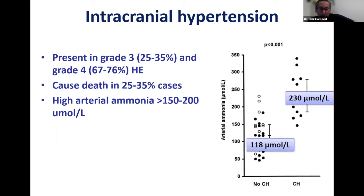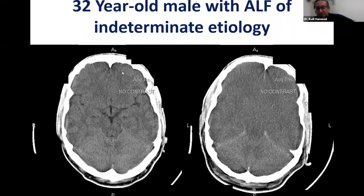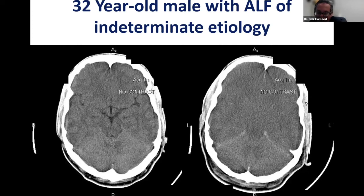High arterial ammonia is a risk factor for intracranial hypertension. At UCSF and most of our centers in the U.S., we manage most of these patients with acute liver failure aggressively for intracranial hypertension. We had a case of a 32-year-old male — we didn't know the exact etiology — who was very sick. We had an offer for liver transplant, but the CT scan showed no gray-to-white differentiation and significant cerebral edema. Despite having an offer for liver transplant, the patient herniated and unfortunately passed away.